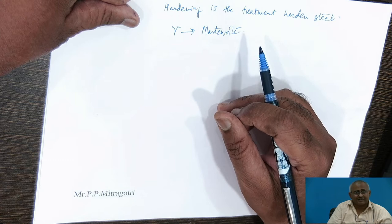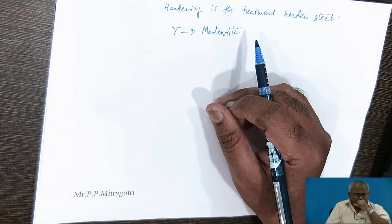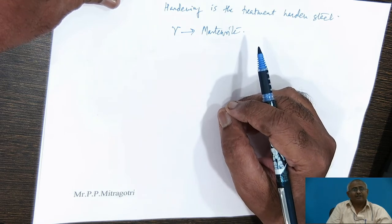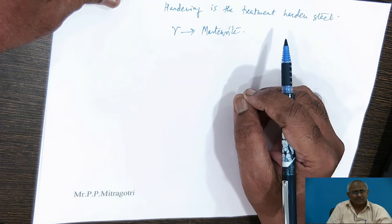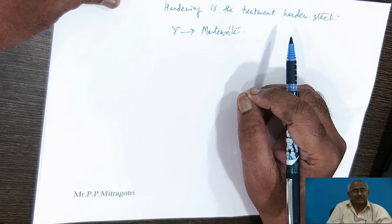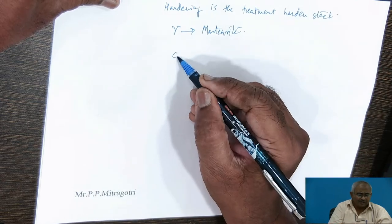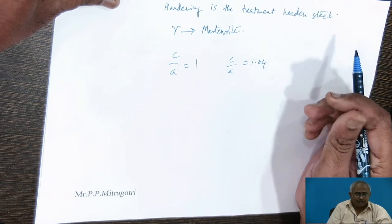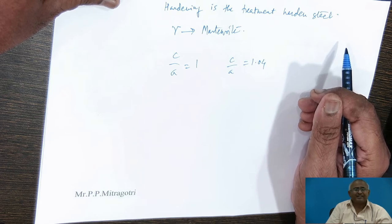To cool at a rate greater than the critical cooling rate, we have to undercool the austenite to the martensitic start temperature, which is generally well below 250°C. This causes sudden transformation of austenite to martensite. In this transformation, the FCC structure (face-centered cubic) with a c/a ratio of 1 is transformed to a BCT structure with a c/a ratio of approximately 1.04. This transformation is accompanied by a volume change and is a sudden transformation.